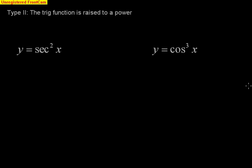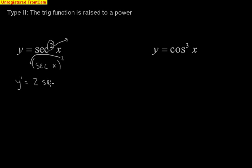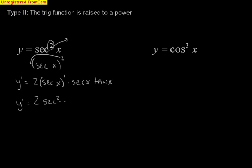Scrolling down, we're going to start with type 2, where the trig function is raised to a power. Notice here I've got secant squared of x. To apply the chain rule, I'm going to pull out the power and write it with parentheses: secant of x, quantity squared. When I take the derivative, I bring the power down — so 2 secant x to the first — then multiply by the derivative of the inside. The derivative of secant is secant tangent, so secant x tangent x. The final answer is 2 secant squared x times tangent x.